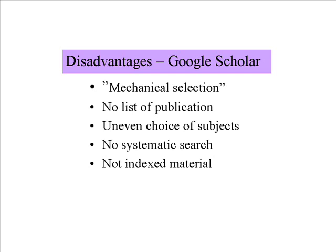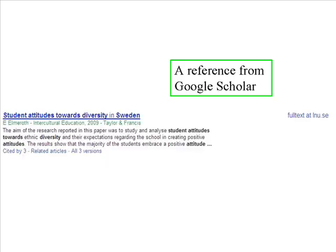Google Scholar is not an option if your assignment is to do a systematic literature search. The material has not been indexed — that is, it has not been provided with describing subject words to continue your search with.